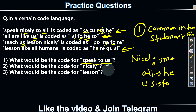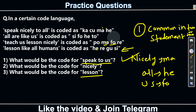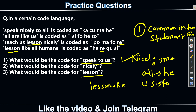The second sub-question: code for nicely — we already found it is ma. For 'lesson': lesson appears in the third and fourth statements. Checking the common codes between those two statements, re is common in both. So the answer is re for lesson. This is like a game — you just need a little concentration and it becomes very easy.